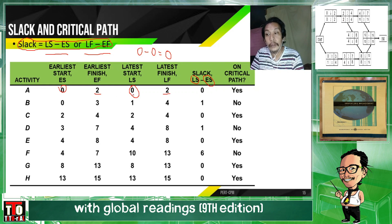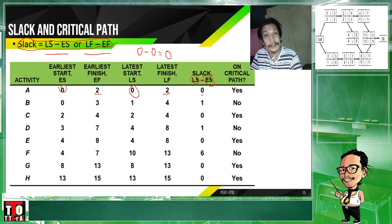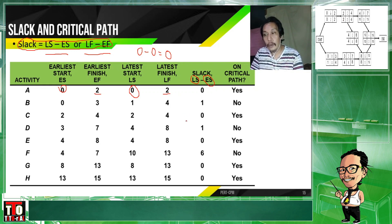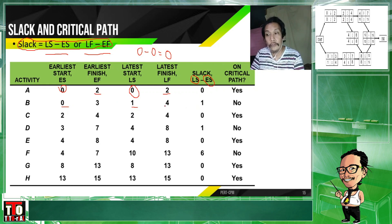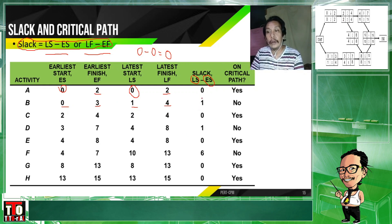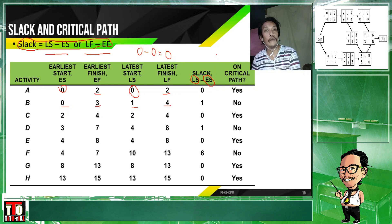2 minus 2 would also arrive at 0. Another example — I just want to prove that either of the two formulas gives the same answer. For Activity B: latest start of Activity B is 1, earliest start is 0, so 1 minus 0 is definitely 1. And LF minus EF: 4 minus 3 is also 1. We just follow the formula to get the slack value.